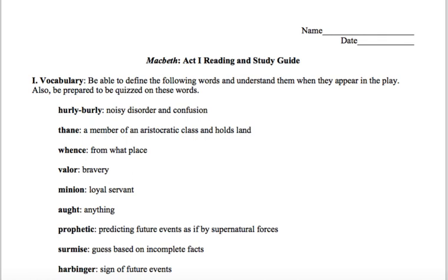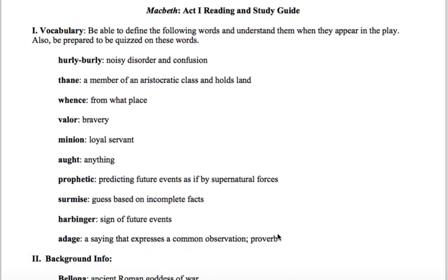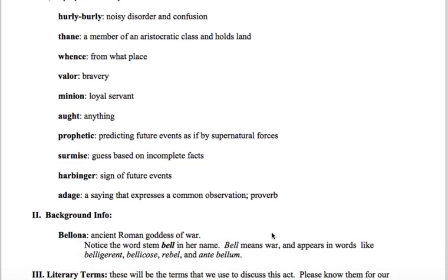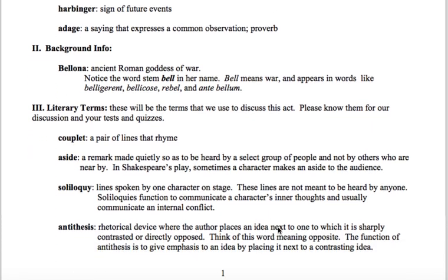If you take a look at your screen, you have the study guide information that you can find in the lesson folder for Monday. I give you some vocabulary terms that appear in the text. One of them is the term Thane, which is a member of an aristocratic class who holds land — this is the new title that Macbeth has been given. The word valor means bravery. Prophetic means predicting future events as if by supernatural forces, and we saw that with the witches.